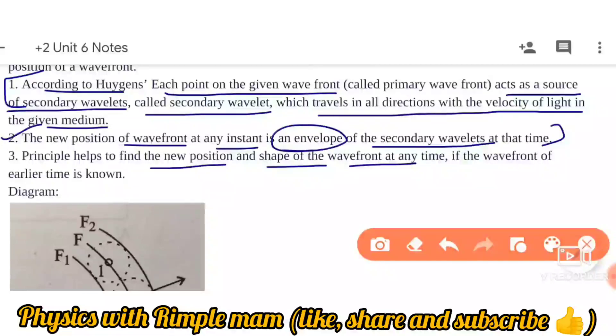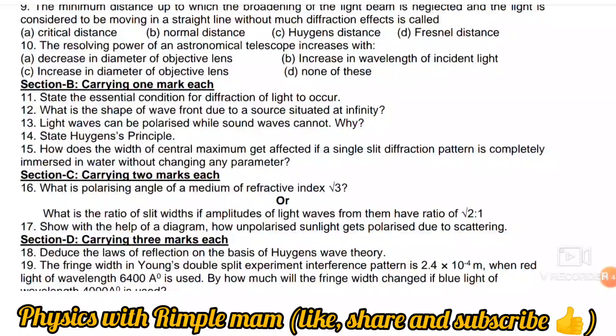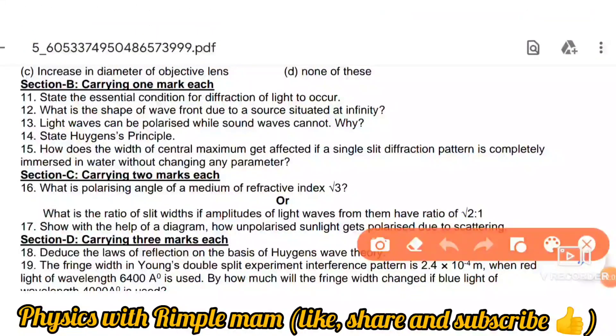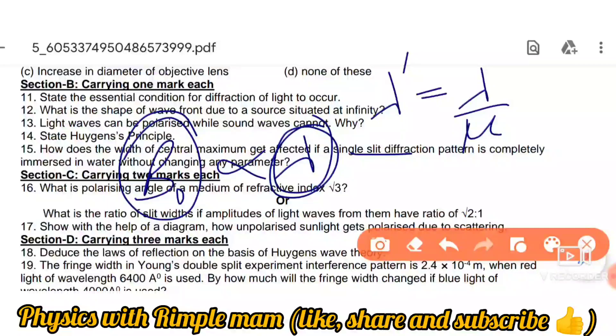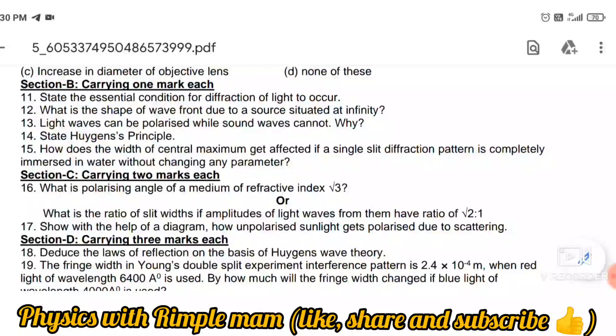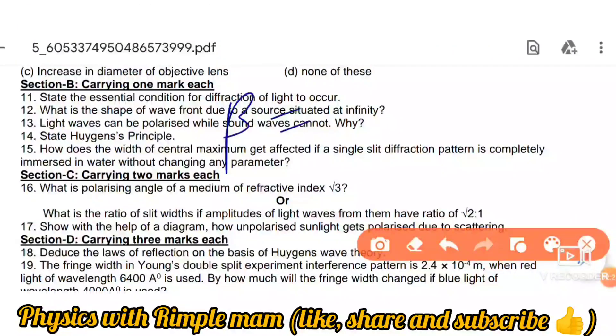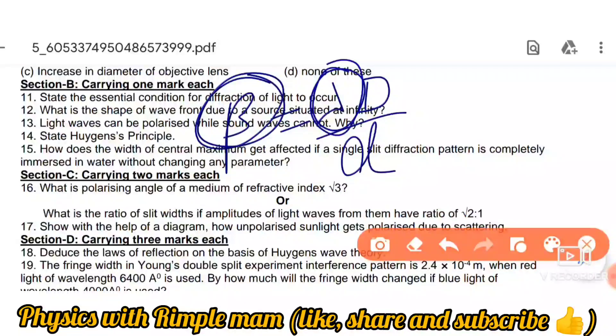Question 15: How does the width of central maxima get affected if a single slit diffraction pattern is completely immersed in water without changing any parameter? If we immerse a slit completely in water, lambda dash equals lambda divided by mu. The width is directly proportional to lambda. If width decreases, then lambda will also decrease. In simple language, if beta decreases then lambda also decreases. Beta equals lambda D over d. If we immerse it and beta decreases, lambda will also decrease.